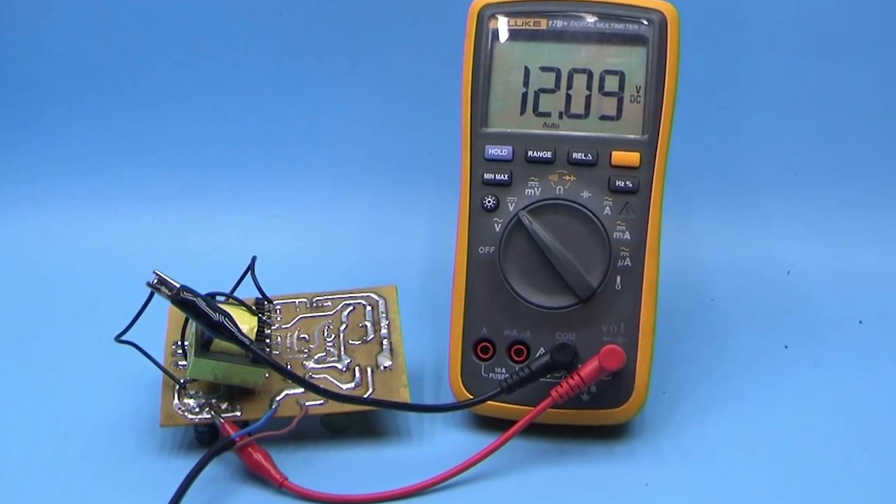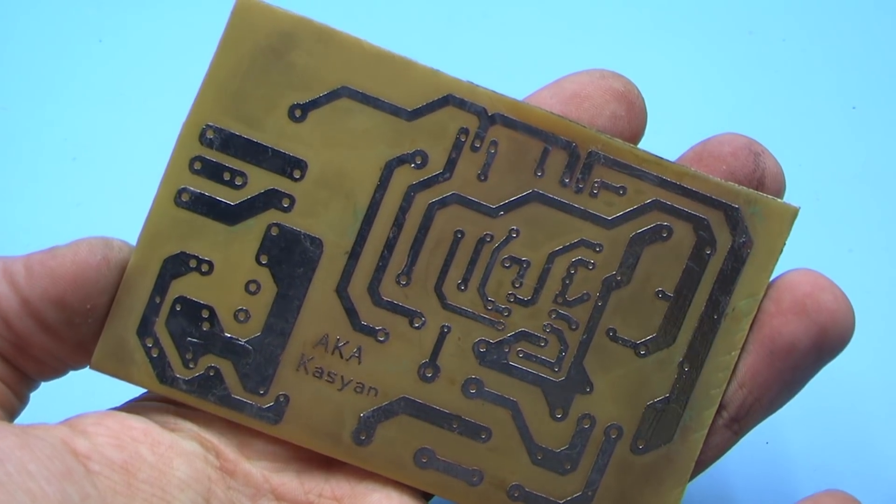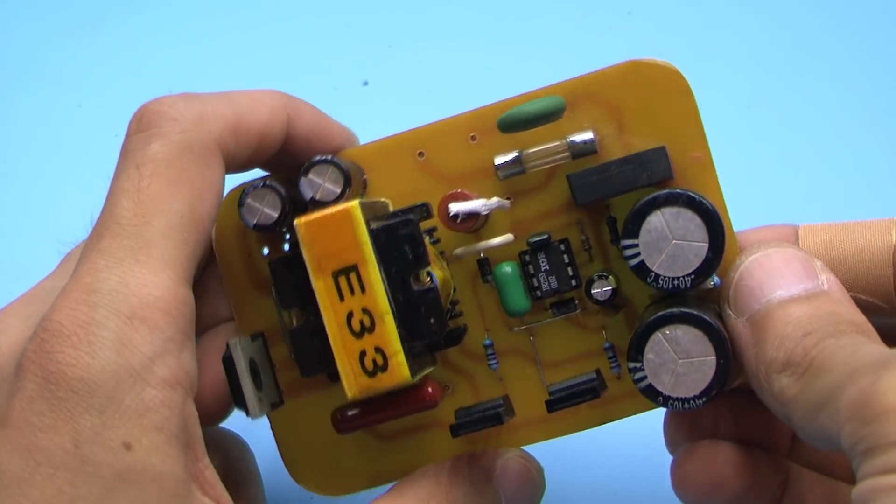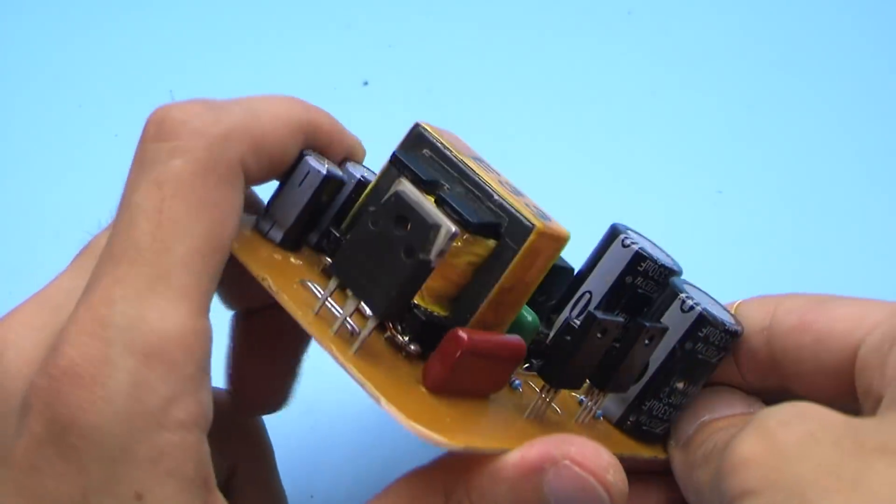But in my case there were problems, because I forgot to mirror vertically the transformer on the board template. And when I noticed, the board was already etched, and the half of the circuit was assembled.